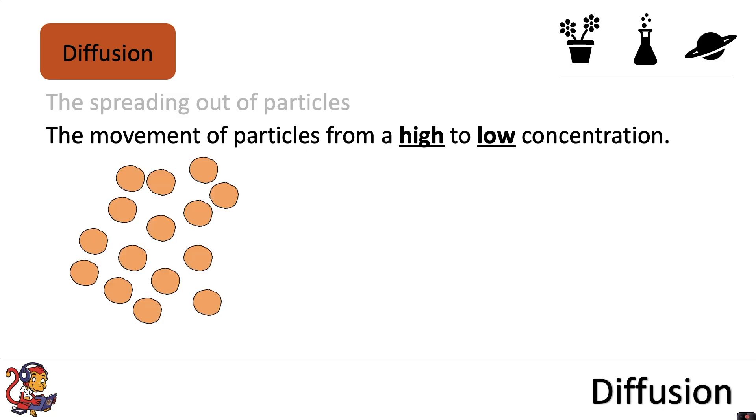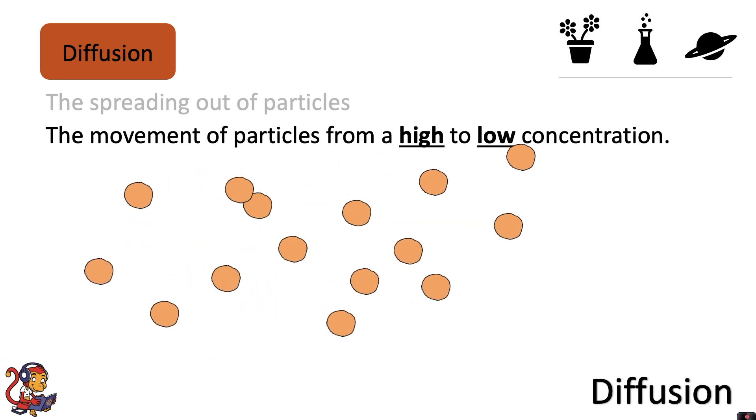So for example here, when we have the particles bundled together in a high concentration, which means there's lots of particles per volume, diffusion will mean that these particles will spread out and move from a high to low concentration.